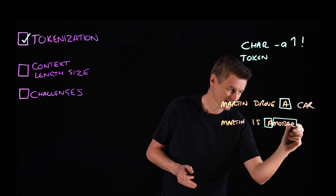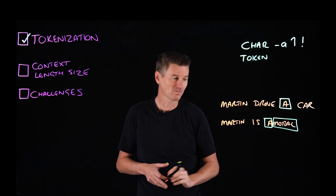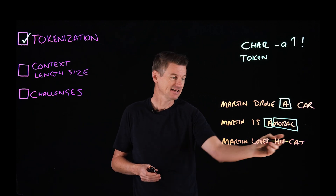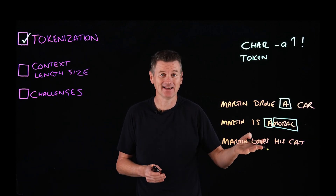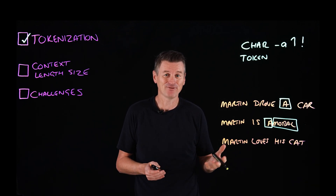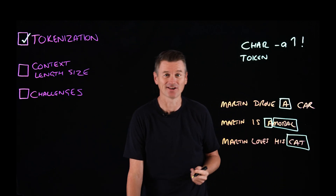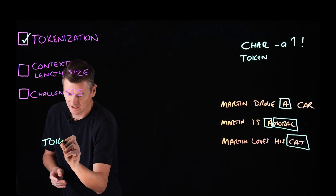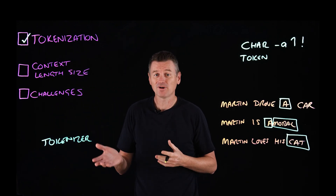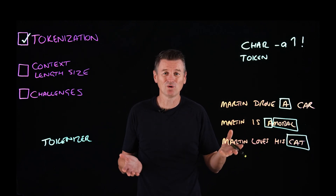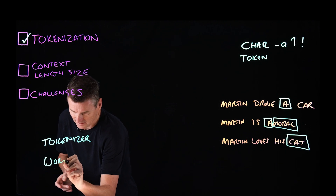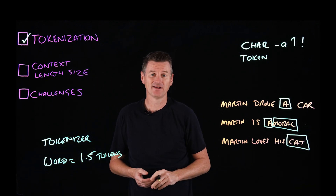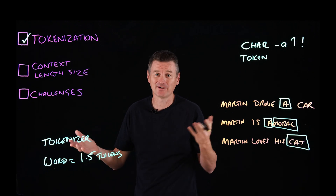A token for 'a' and another token for 'moral.' One more: 'Martin loves his cat.' The 'a' in 'cat' is simply a letter in a word — it carries no semantic meaning by itself and would therefore not be a distinct token. It's just 'cat.' The tool that converts language to tokens is called a tokenizer. Different tokenizers might tokenize the same passage differently, but a good rule of thumb is that a regular English word is represented by something like 1.5 tokens, so 100 words might result in 150 tokens.